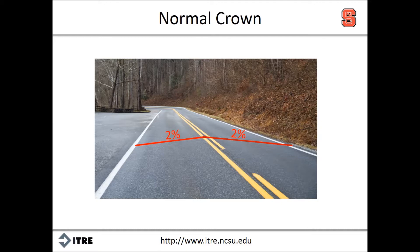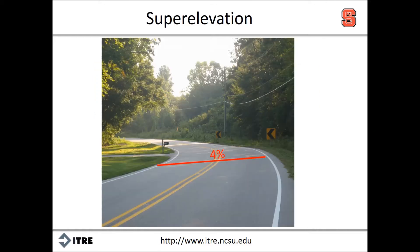Normal crown falls away at a typical rate of 2%. Superelevation is the property of a roadway when the slope along the entire cross section of the roadway is consistent. Superelevation is typically necessary in horizontal curves to help balance the forces acting on a vehicle and keep the vehicle safely on the roadway.